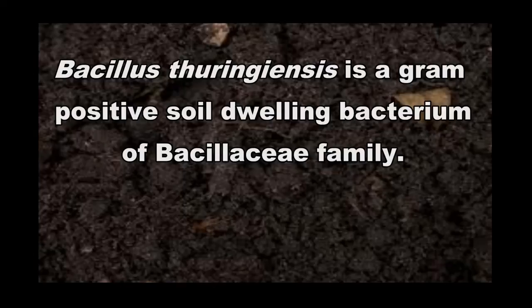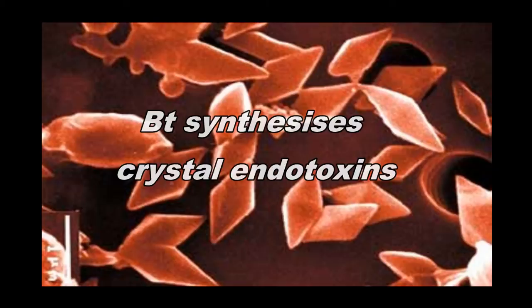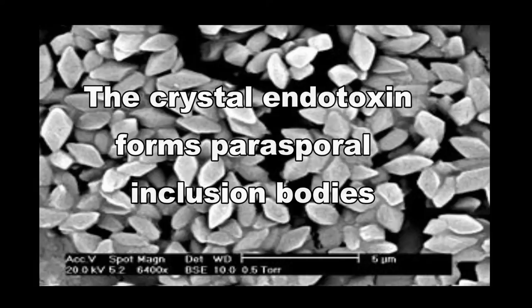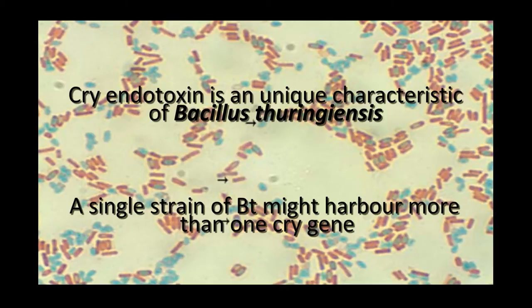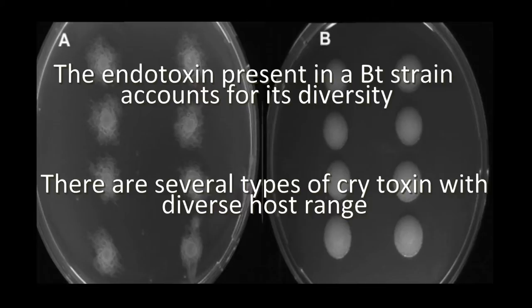Bacillus thuringiensis is a gram-positive soil-dwelling bacterium of the Bacillaceae family. They synthesize crystal endotoxins during their sporulation phase of the growth cycle. These endotoxins form parasporal inclusion bodies which possess strong insecticidal activity. The synthesis of cry endotoxin is a unique characteristic of Bt. A single strain of Bt might harbor more than one cry gene, and the endotoxins present in a Bt strain account for its diversity.